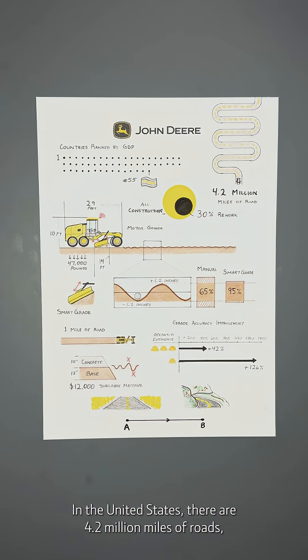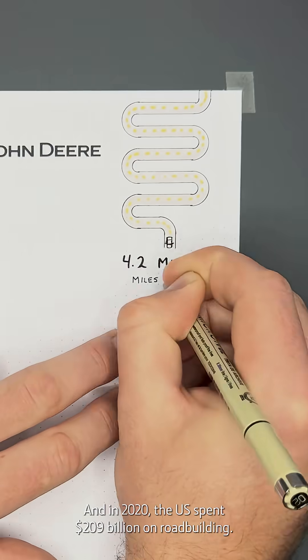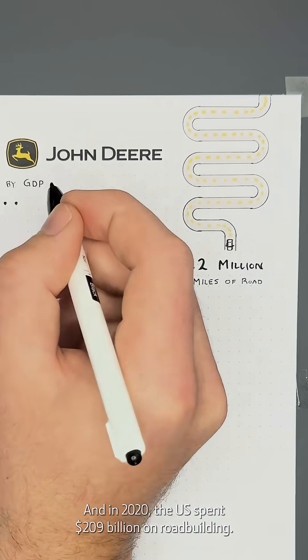In the United States, there are 4.2 million miles of roads, enough to circle the earth over 160 times, and in 2020, the U.S. spent $209 billion on road building.